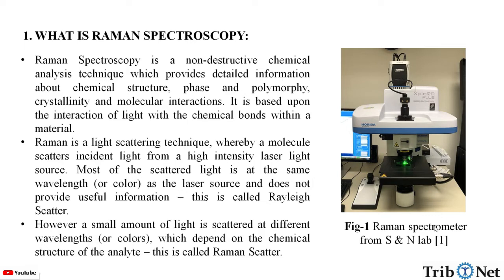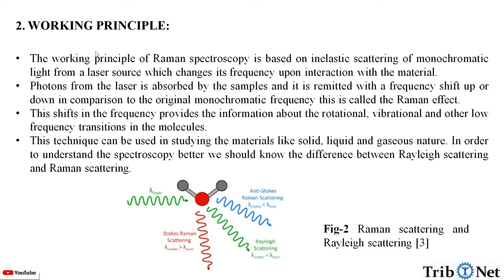Here in this figure we can see the Raman spectroscopy from SNN lab. The working principle of Raman spectroscopy is based on inelastic scattering of monochromatic light from a laser source, which changes its frequency upon interaction with the material. Photons from the laser are absorbed by the sample and remitted with a frequency shift up or down in comparison to the original monochromatic frequency — this is the Raman effect. This shift in frequency provides information about the rotational, vibrational, and other low frequency transitions in the molecules.